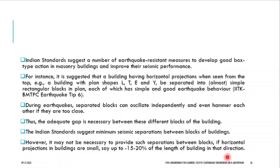If you are having a total height of 10 meters, 20% of 10 is 2 meters. So if you are constructing another block, it should be 2 meters apart. If one building is 10 meters, 10 × 0.15 = 1.5 meters — you provide 1.5 meters of separation. This is one way of separation.